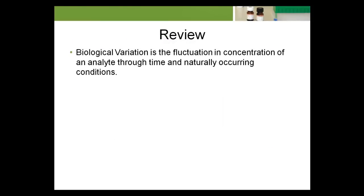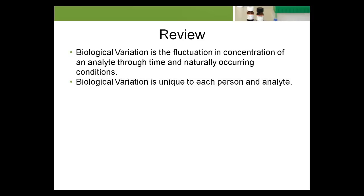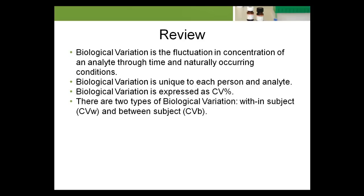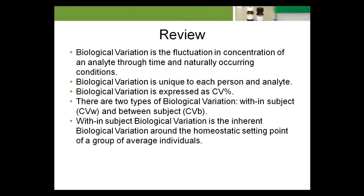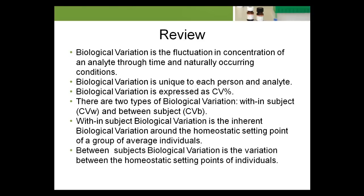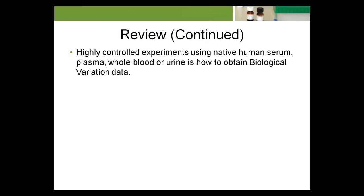Biological variation is the fluctuation in concentration of an analyte through time and naturally occurring conditions. Biological variation is unique to each person and analyte, and is expressed as CV percent. There are two types of biological variation: within-subject, CVW, and between-subject, CVB. Within-subject biological variation is the inherent biological variation around the homeostatic setting point of a group of average individuals. Highly controlled experiments using native human serum, plasma, whole blood, or urine is how biological variation data is obtained.